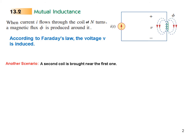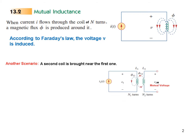Now let's see another scenario: a second coil is brought near the first one. Some of the flux lines cut only the first coil — we call these phi11 — and some cut only the second coil, which we call phi12.